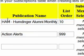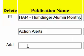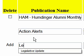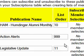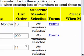So here we have Humdinger Alumni Monthly E-News, Action Alerts, and I'm going to add one more, which is called Legislative Update, and I'm going to make that number 11 so that it'll appear in order between these two existing ones.